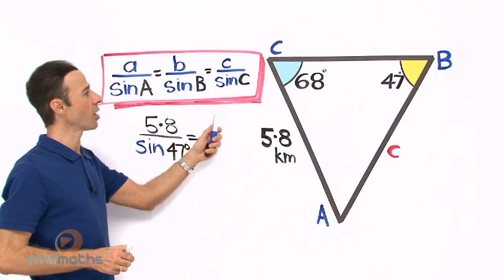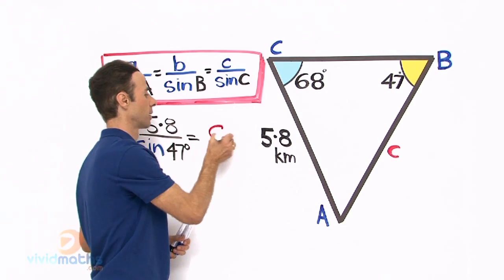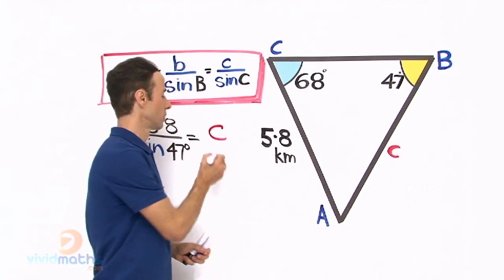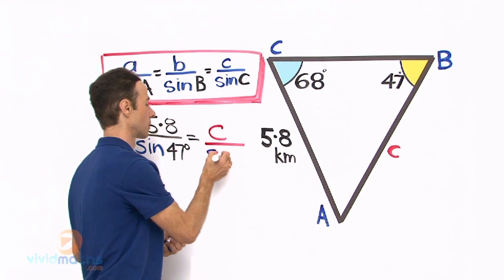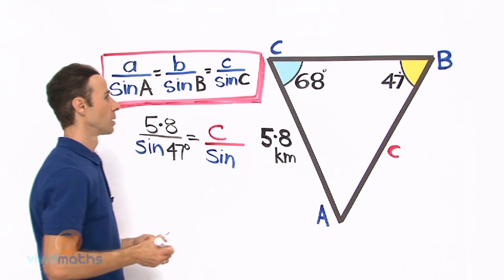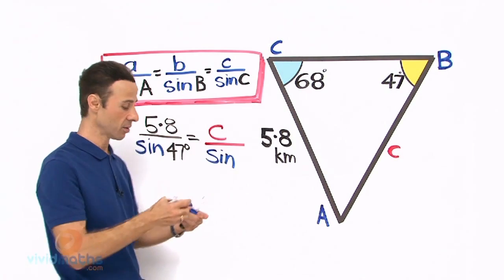And that equals little c over sine big C. Let us write down the little c right there, all over sine 68, that is the big C right there, the angle.